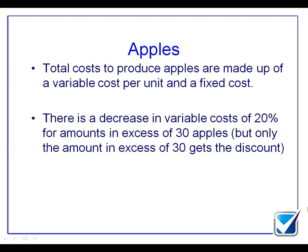So there's a decrease in variable cost of 20%, but only for amounts in excess of 30 apples. So we only apply the discount to anything over and above the 30 apples. And what we have is actual results, which will be based on 35 apples and then 5 apples. And what we need to do is find a way to solve this equation to make sure that we can find out what A and B will be.